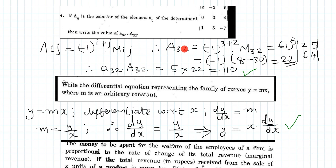Capital A₃₂ is equal to (−1)^(i+j). Here i is 3 and j is 2, so we get (−1)^(3+2) multiplied by the minor M₃₂. That is (−1)^5 multiplied by the minor of M₃₂. The minor of 32 is found by removing the second column and third row — that is, the third row and second column.